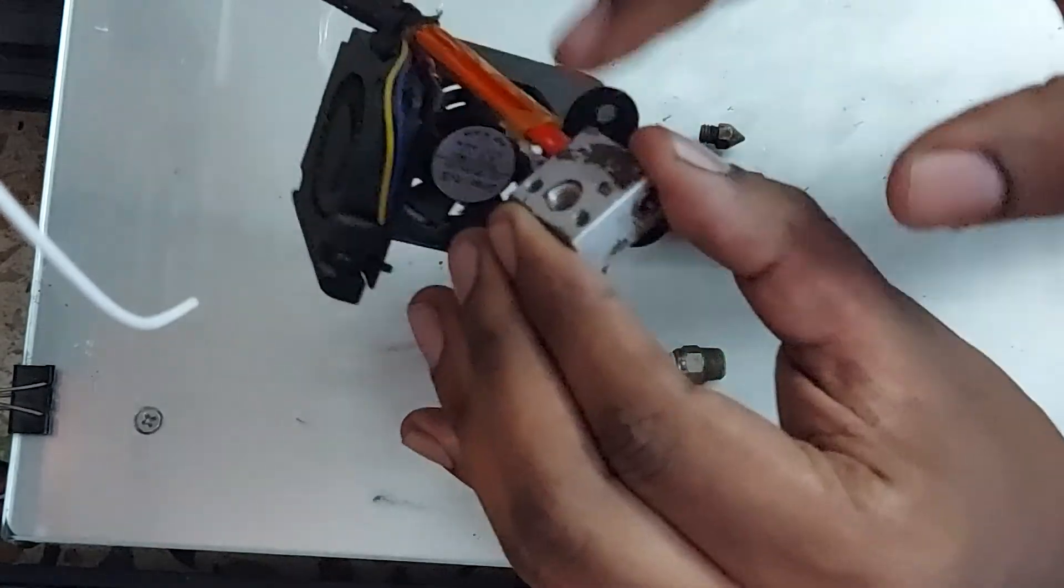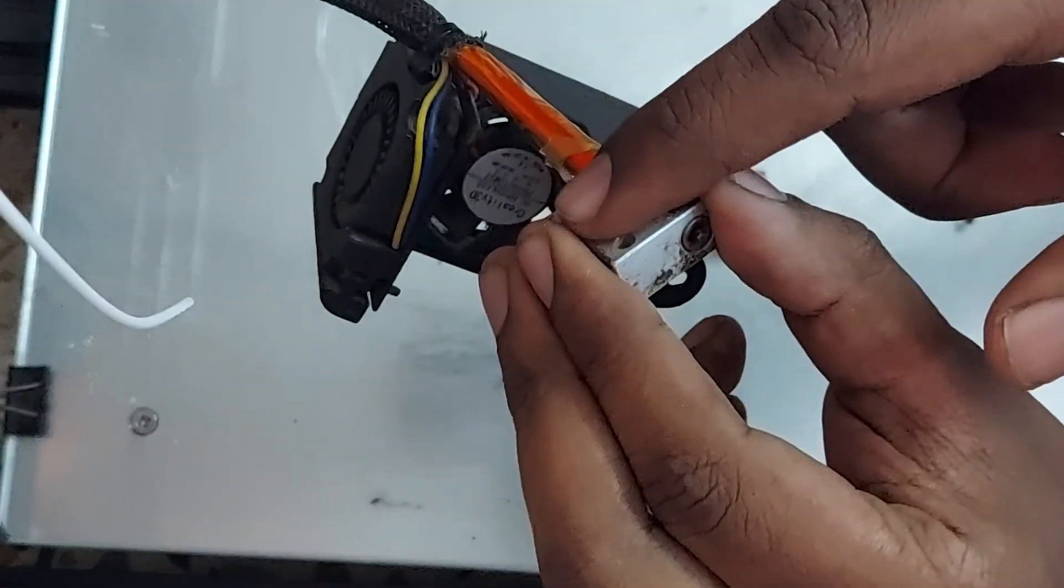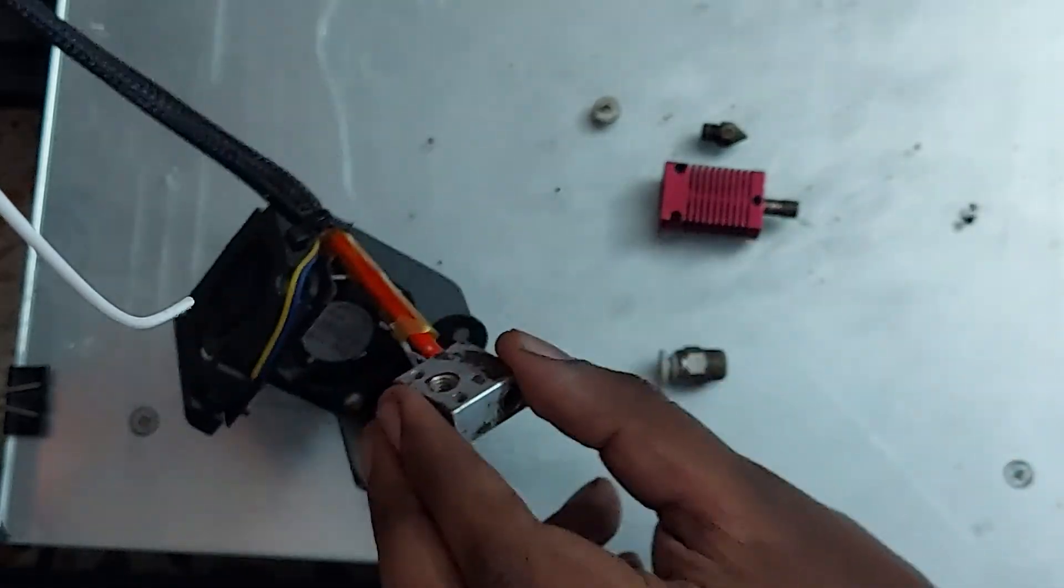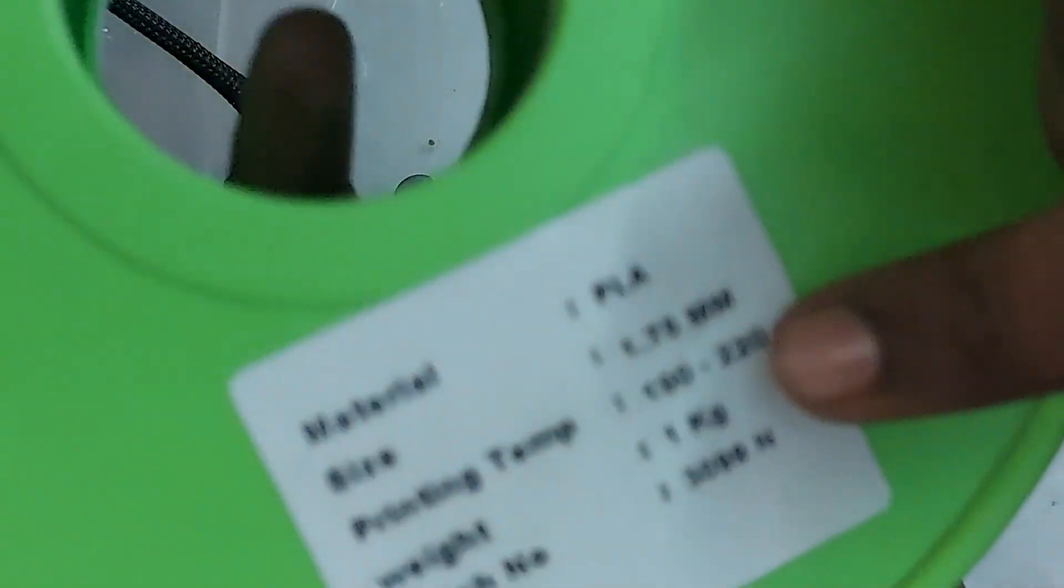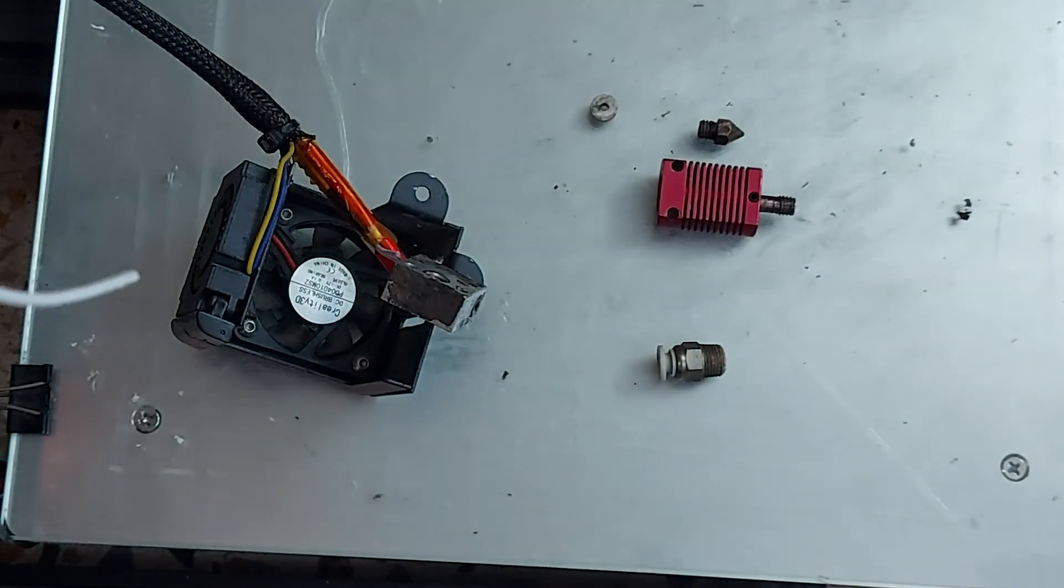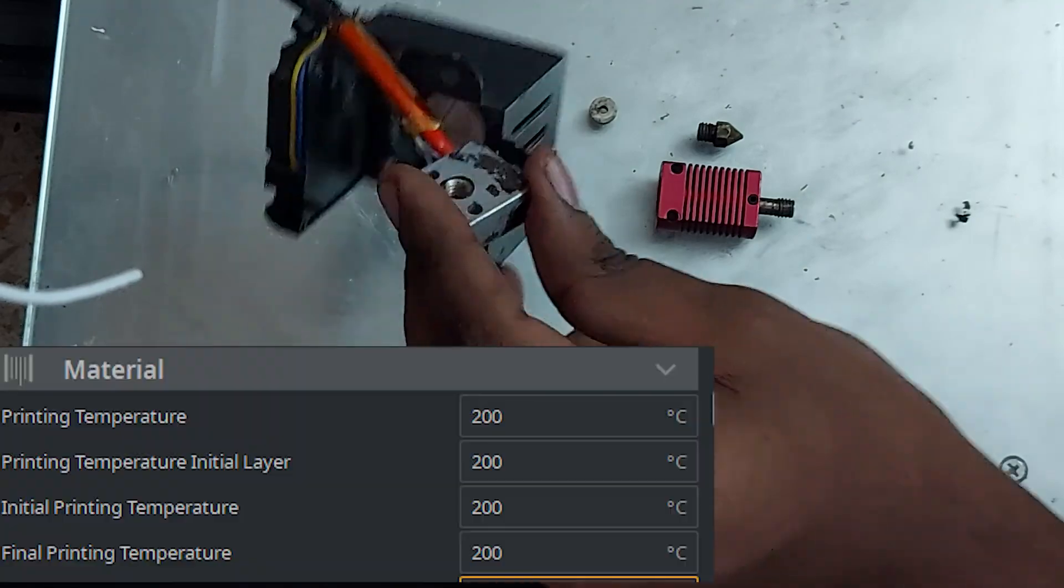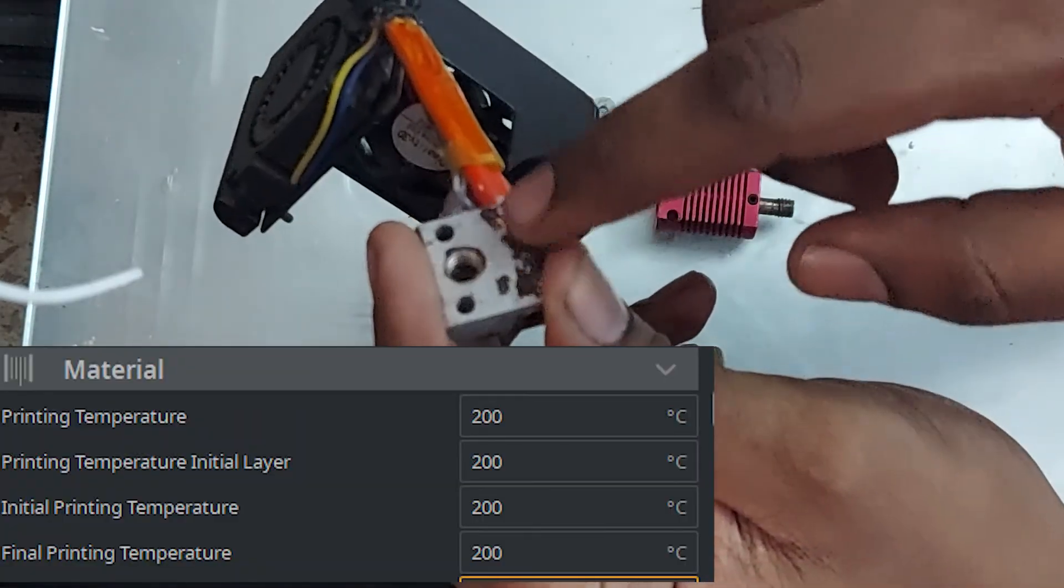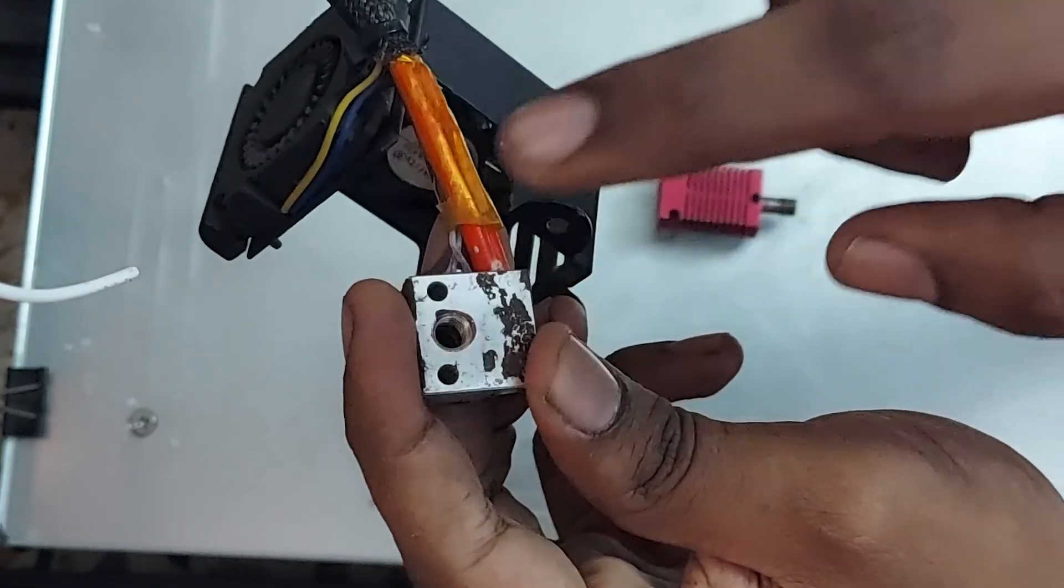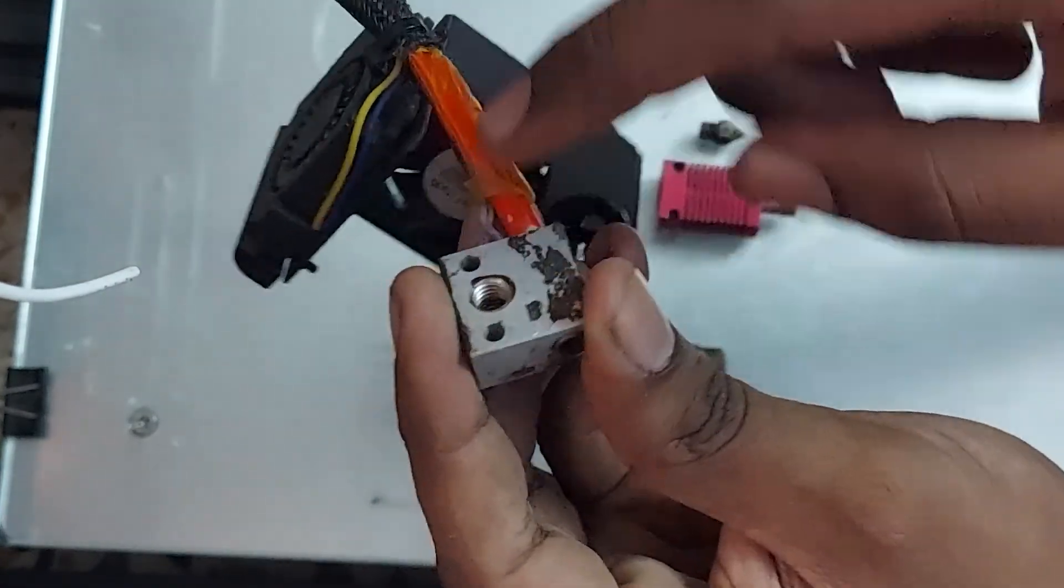What this does is it will keep the consistent temperature. Let's say I want to print this at 200. Between the range of 190 and 220, I'm taking a temperature of 200. So if I set the printing temperature to 200 Celsius...